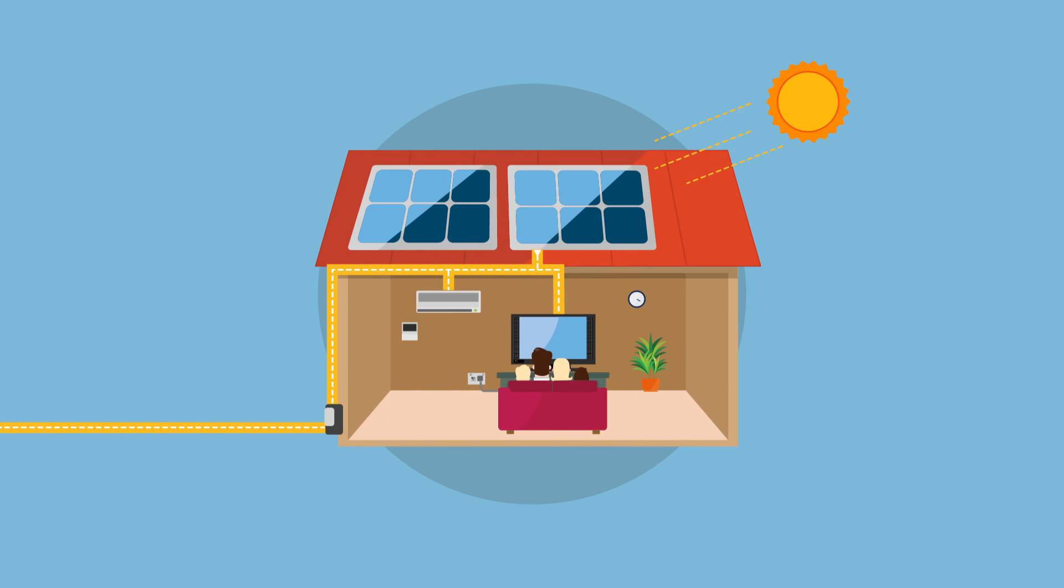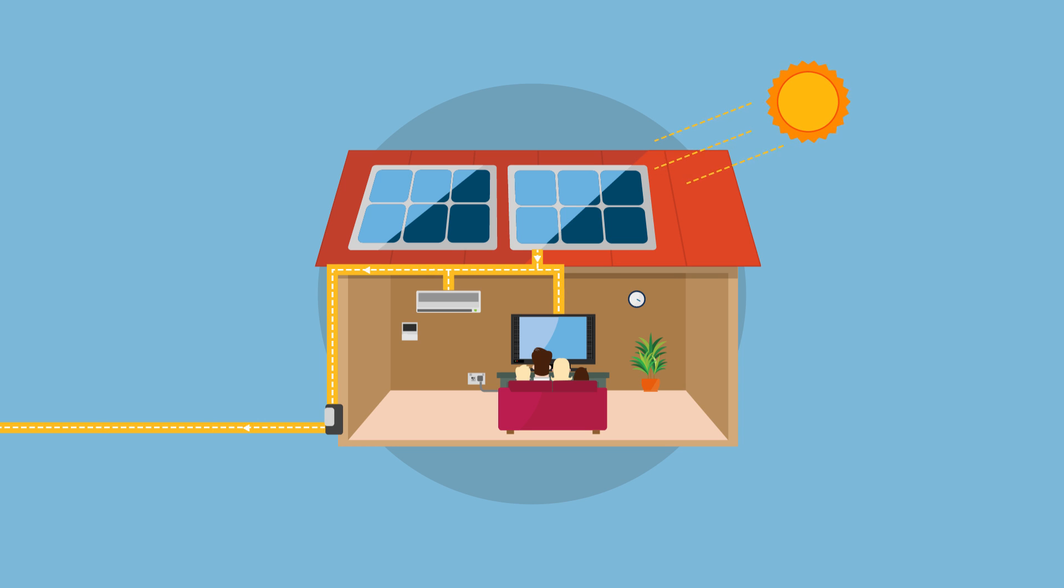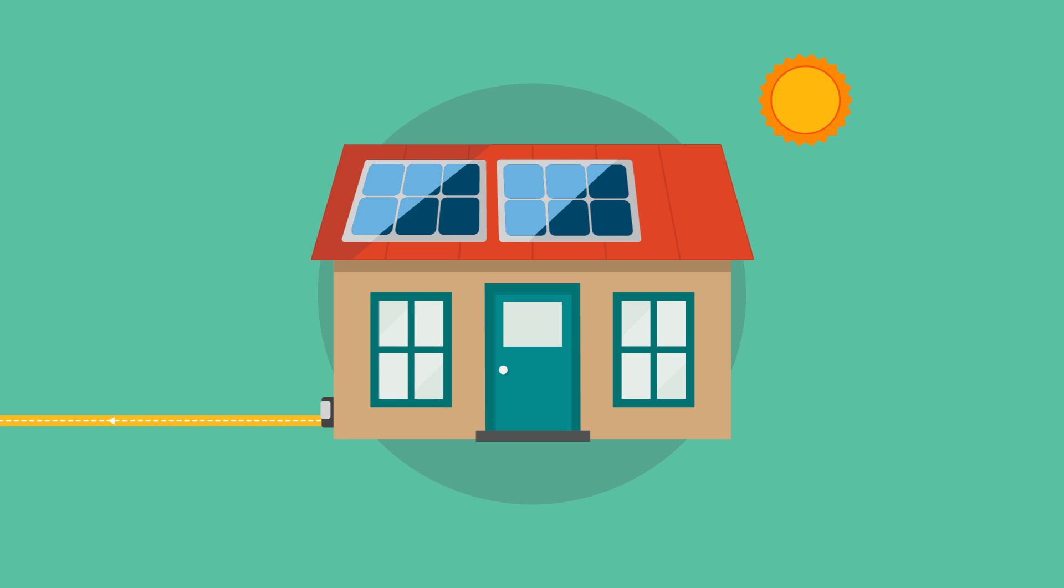When there's a lot of sun, there can be too much power being sent to our network at once, which can cause power system equipment to trip. On other days, when cloud covers the solar panels, they can't generate enough energy and the power station needs to quickly increase the supply to those houses.